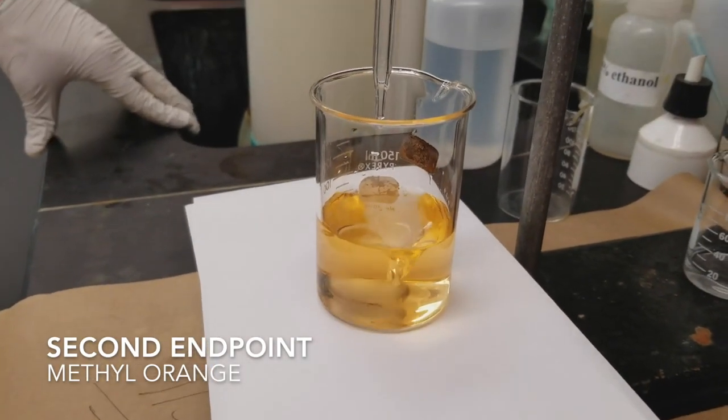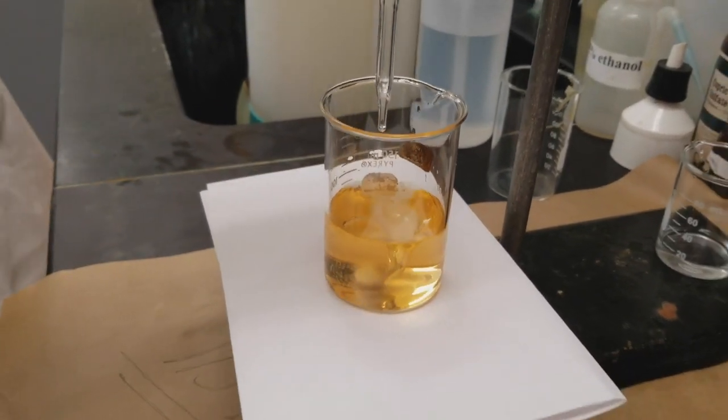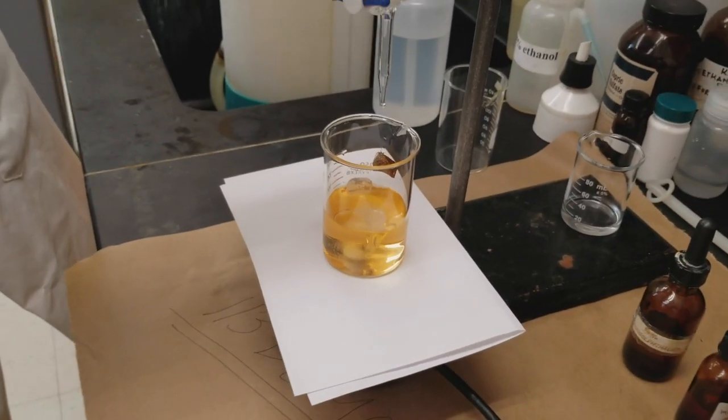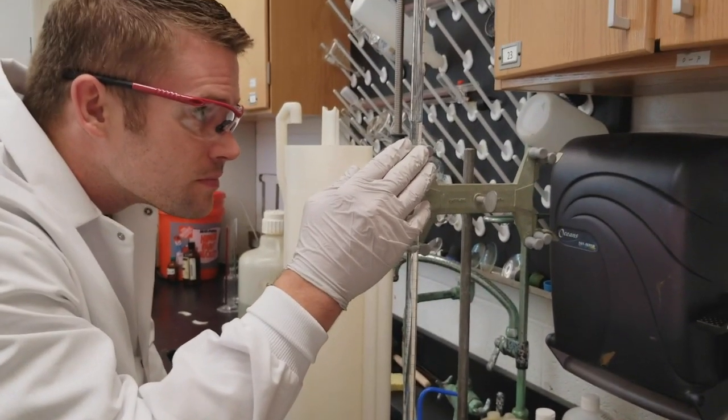So now we've reached the second equivalence point for our titration, and we want to make sure that we record the burette. We want to record that volume of HCl that's left.